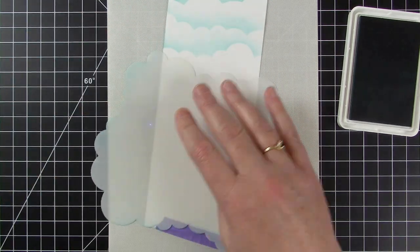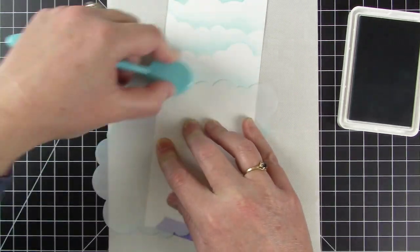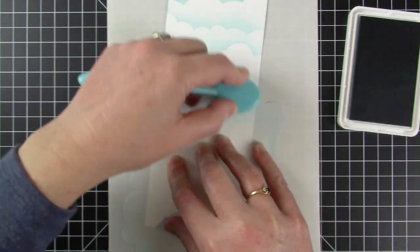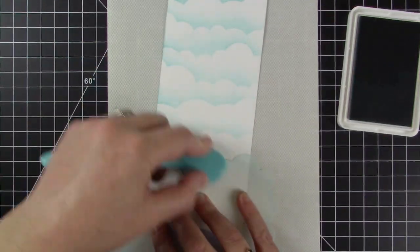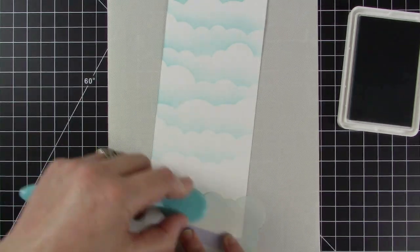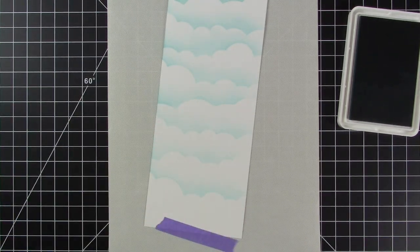I taped the bottom of the panel down so the paper didn't move around on the slick surface while I was stenciling and I'm just going back and forth with my blending brush moving the cloud stencil at different angles.